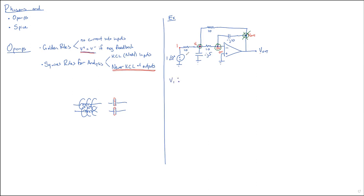Let's do KCL at V1 first. John Lightfoot, what's the current flowing to the left at V1? V1 minus 1, over 10. Yep. Jack, how about the current flowing down out of V1? V1 over negative-J5. That's right — that's the current flowing down. We've got left, we've got down. How about to the right, Pavel? V1 over 10. And I'll do the up one, which is V1 minus V-out over 10. All of that has to equal zero — that's our first equation.